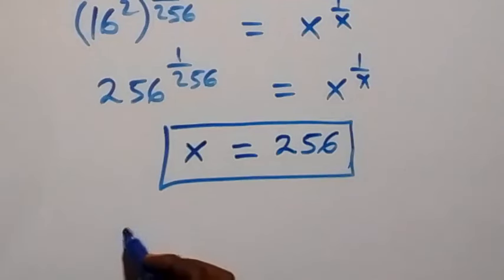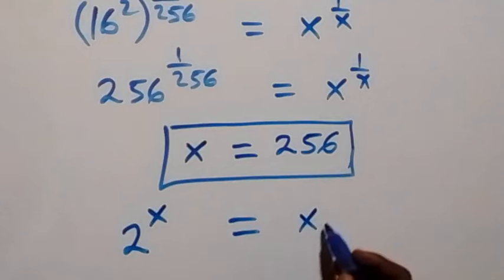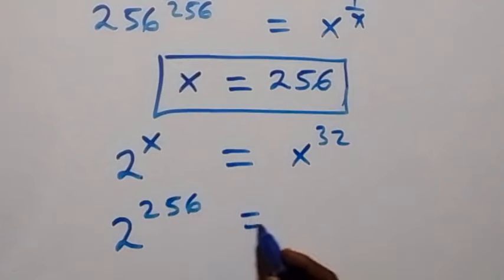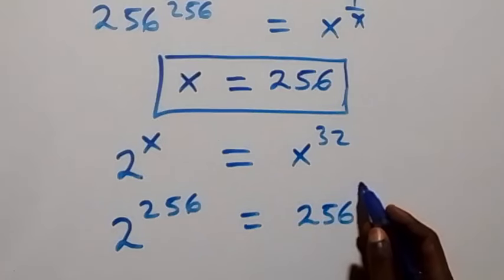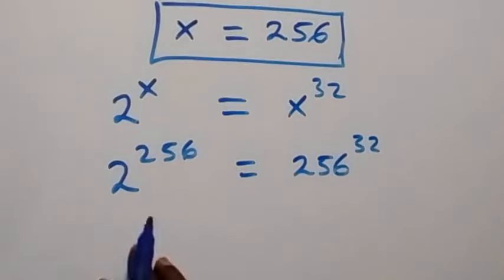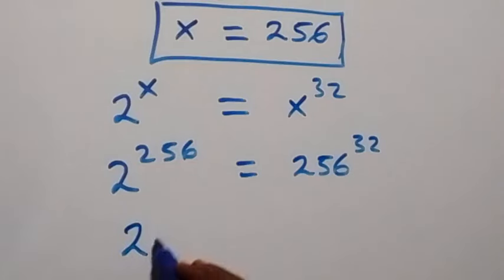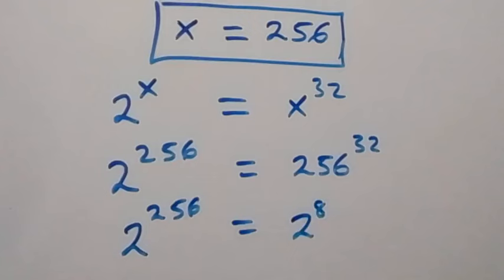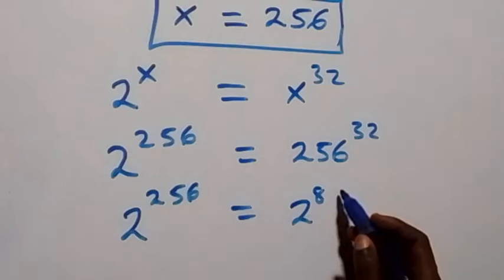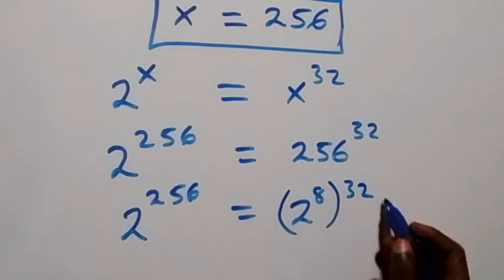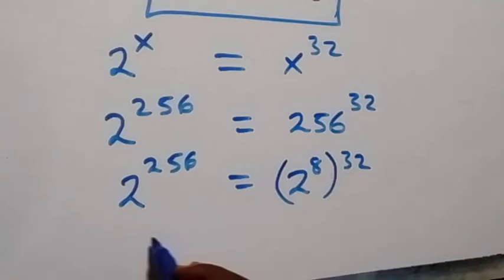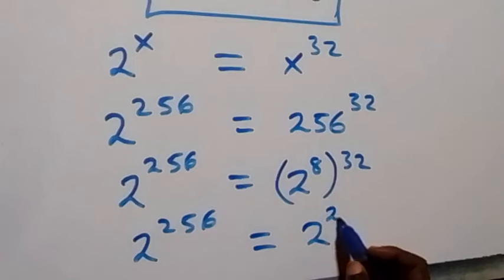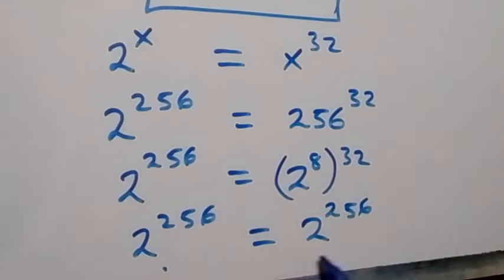To verify that x equals 256 satisfies the original problem, substitute into 2 raised to power x equals x raised to power 32. We get 2 raised to power 256 equals 256 raised to power 32. We can write 256 as 2 raised to power 8, so the right-hand side becomes 2 raised to power 8 times 32, which is 2 raised to power 256. The left-hand side equals the right-hand side, confirming the solution.